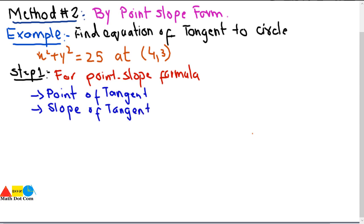According to the given data, the point of tangency is (4, 3) and we don't have the slope of the tangent. So we have to find the slope of the tangent. Let's see how we can find that.